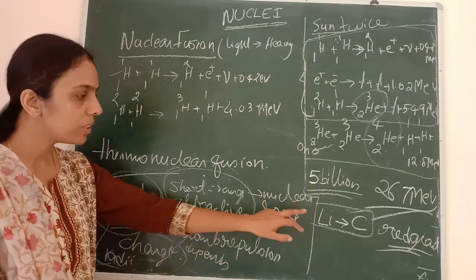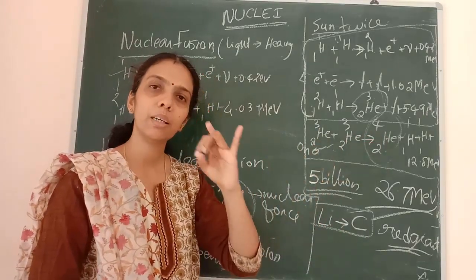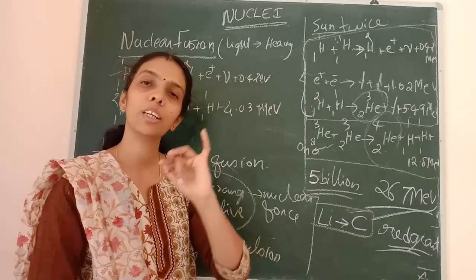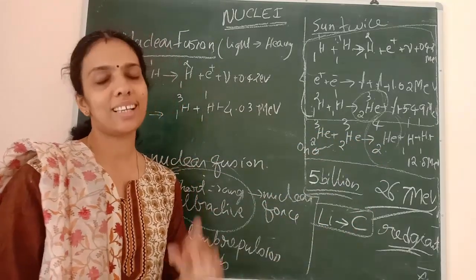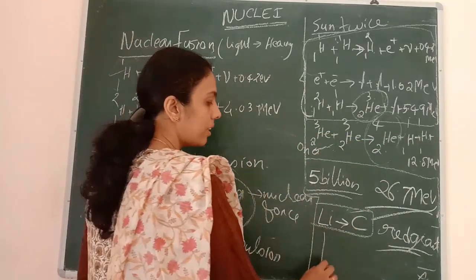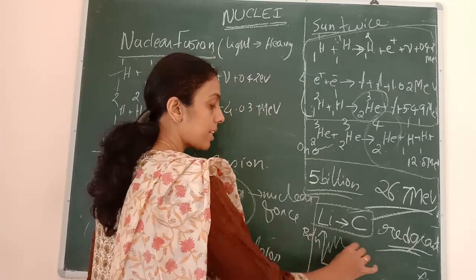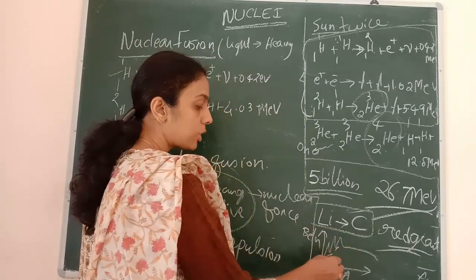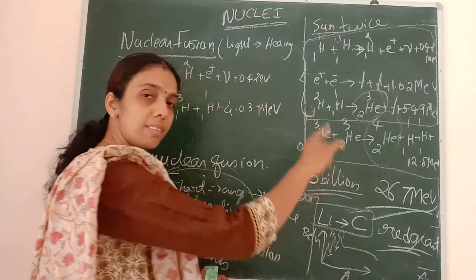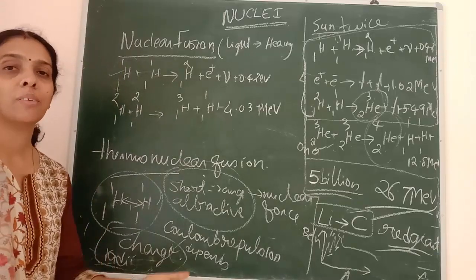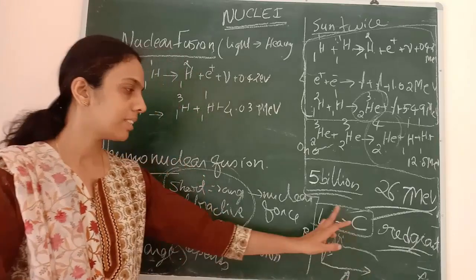You might wonder why the sun converts to helium, lithium, and carbon rather than beryllium or boron. The answer lies in the binding energy per nucleon vs. mass number graph. Only those nuclei at a higher binding energy state — helium, lithium, carbon — will be the products of fusion. That is why we don't obtain the rest of the nuclei.